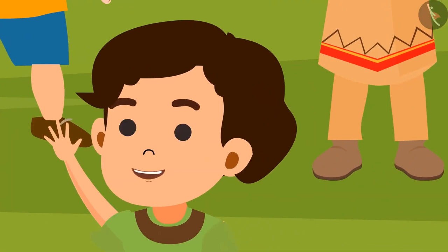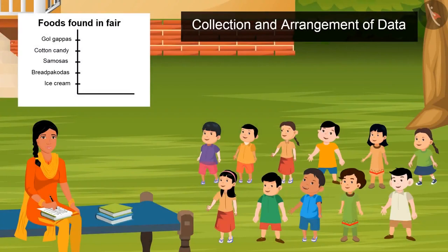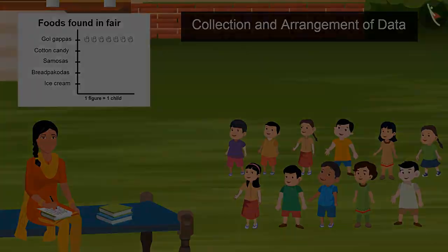Sister, let's discuss one more example based on data collection and arrangement. Yes, right — we'll also get late while playing there, so let's collect some data related to foods. So now tell me, who all wants to enjoy gol gappa? One, two, three, four, five, six, and seven.